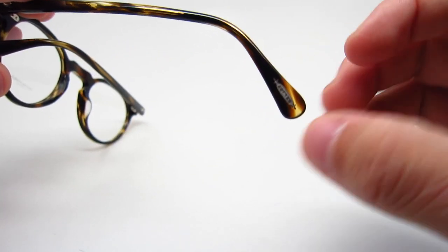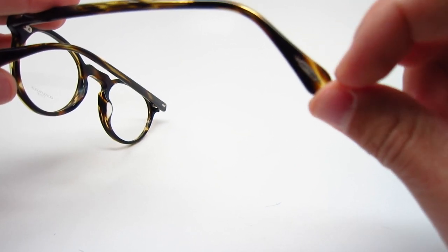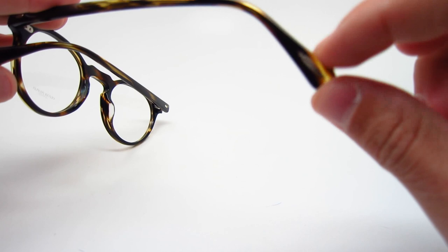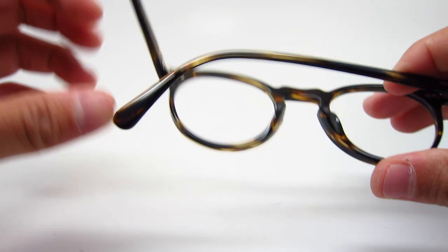Also didn't show you, at the end of the left temple it does have the Oliver Peoples logo emblem in metal. It's on the inside of the frame. It's not on the right side, just on the left side.